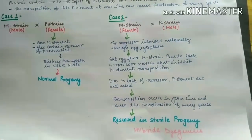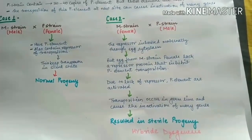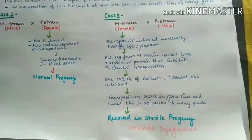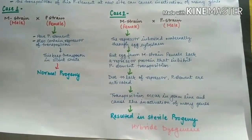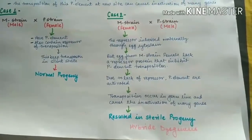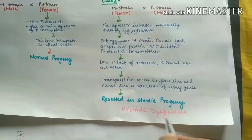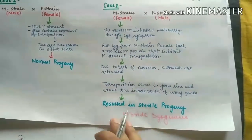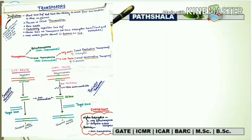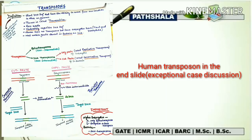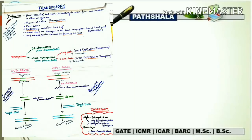In summary, just due to the difference in which strain provides the female: in Case 1, the female came from the P strain, while in Case 2, the female came from the M strain. This difference alone changes the progeny from normal to sterile. Now we know what hybrid dysgenesis is, how it is caused, and what the main factor is behind it. A transposon is a short DNA sequence which has the ability to translocate from one place to another in the genome — this is a rare event.